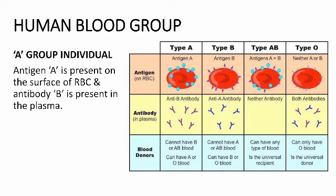First, the A group individual. There are two types of antigens — antigen A and antigen B — and two types of antibodies — antibody A and antibody B. In the diagram, blue color denotes antigen A and purple color denotes antibody B. In A group individuals, antigen A is present on the surface of RBC and antibody B is present in the plasma.